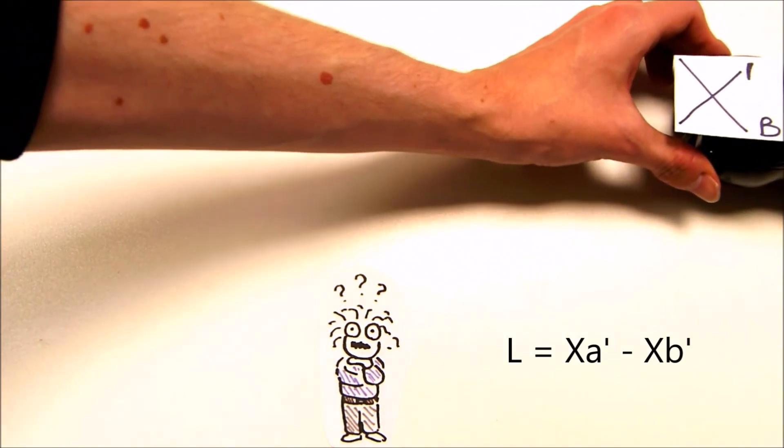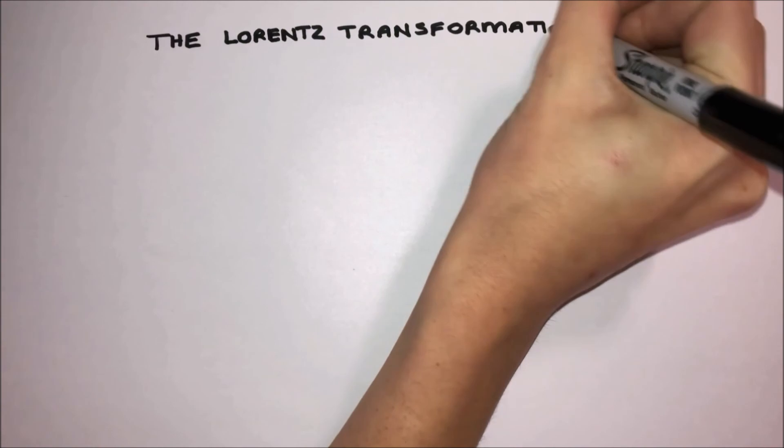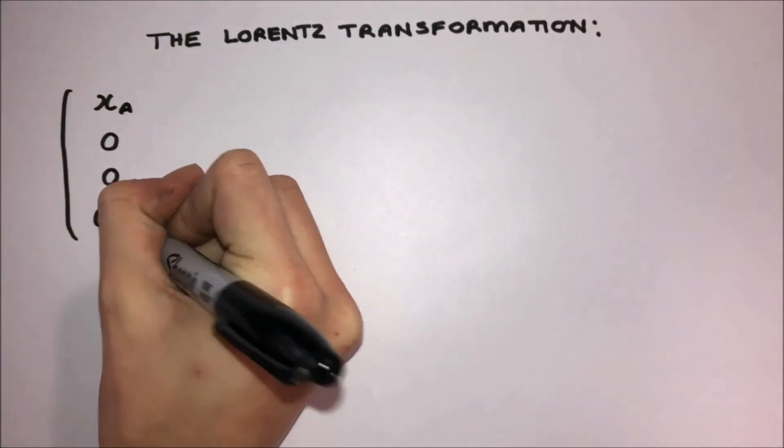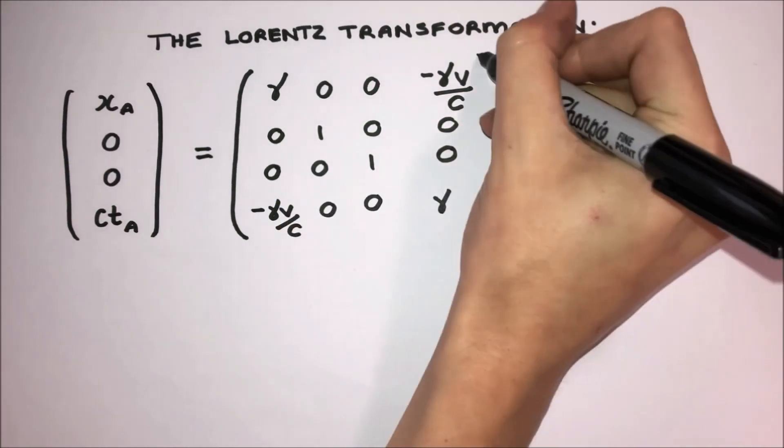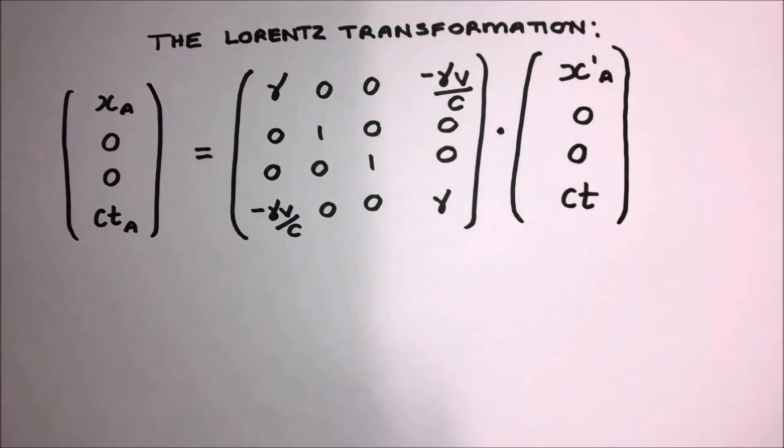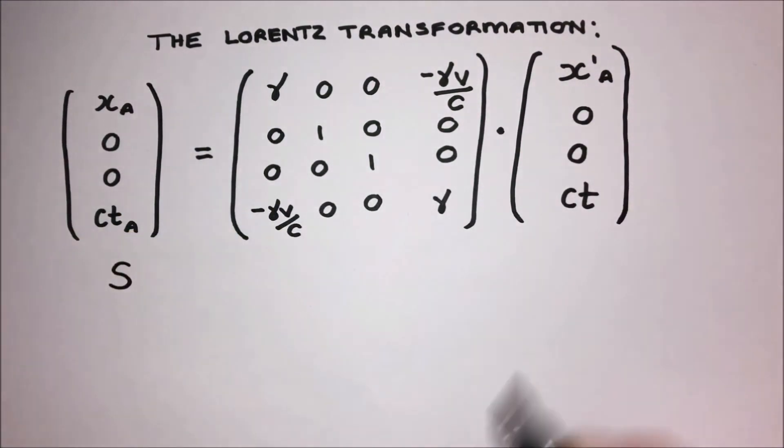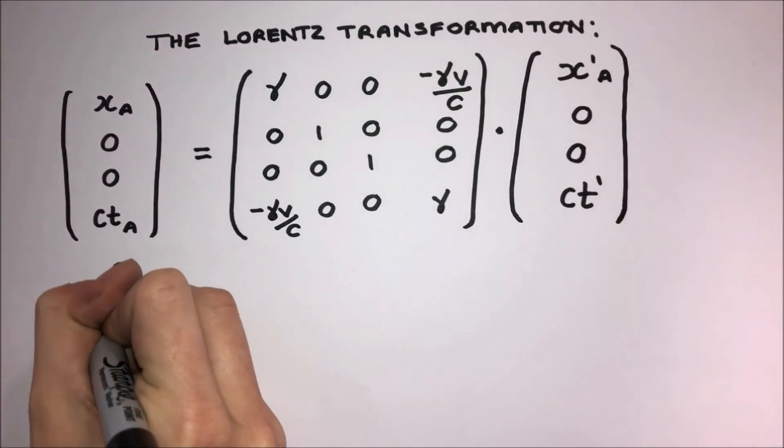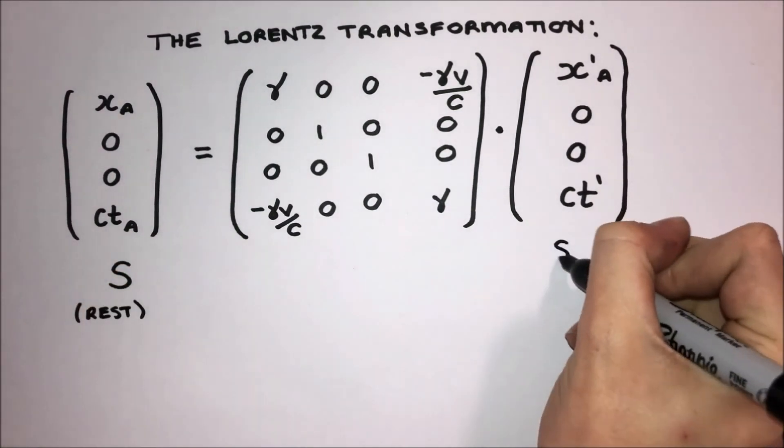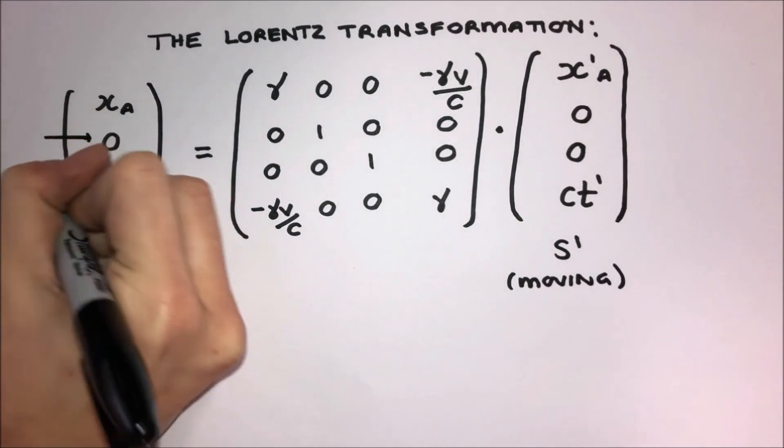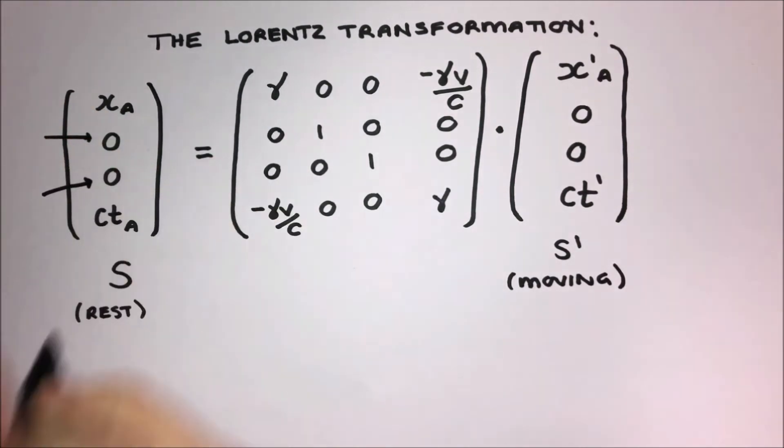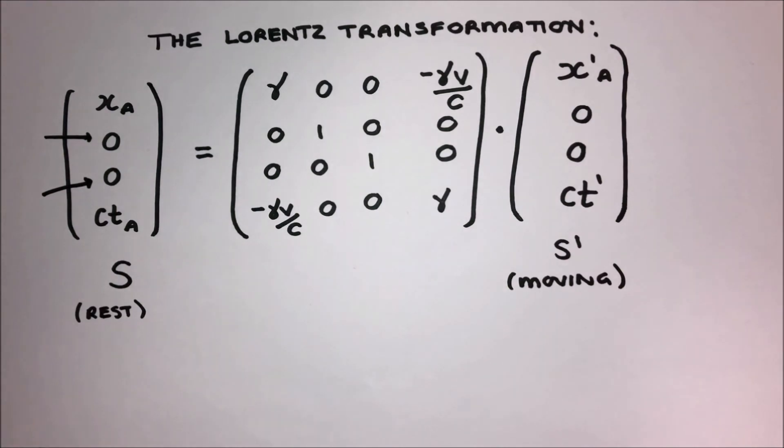These measurements of XB', XA', and XB are related by the Lorentz boost between S and S'. The vector on the left is the spacetime coordinates of one end of the bottle in the rest frame. The vector on the right is the coordinates in the moving frame. The matrix in the middle completes the Lorentz transformation. Note that, because the bottle is moving only along the X axis, there are no Y or Z elements or components in the equation.